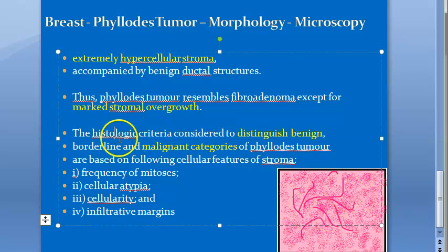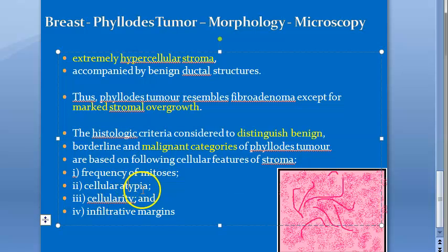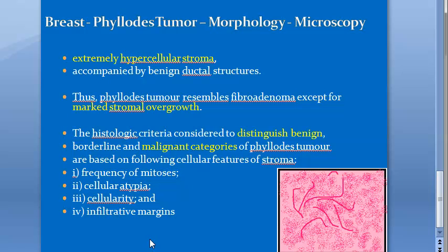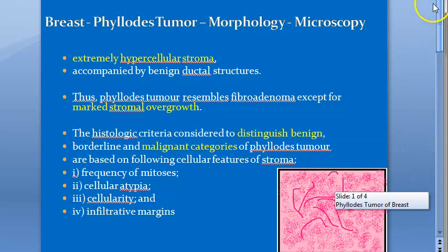Histologic criteria are used to classify phylloides tumor as benign, borderline, or malignant. These criteria include the frequency of mitotic figures, cellular atypia, cellularity, and infiltrative margins. More mitoses, more atypia, more cellularity, and more infiltration indicate malignancy. For MD-level study, specific thresholds for mitotic figures, atypia, and infiltration are used for grading.